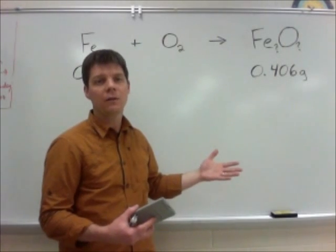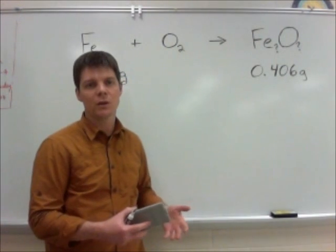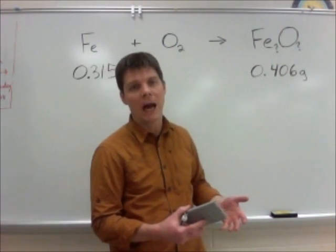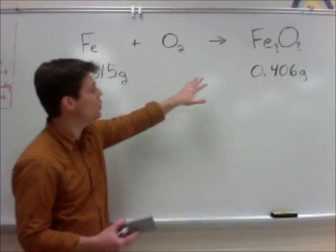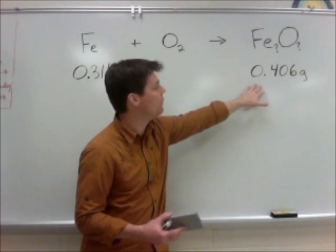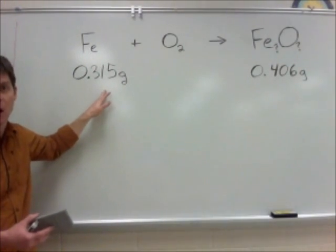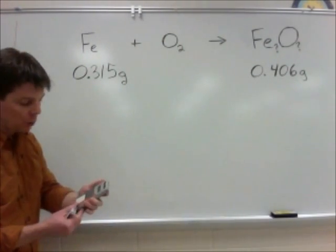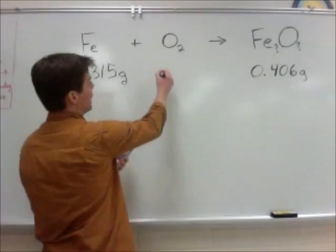Now we can use conservation of matter or conservation of mass to determine the mass of oxygen which is going to be used up in this reaction. Because the iron will be conserved, we can assume that there will be of this 0.406 grams, 0.315 grams of iron. So by subtraction, we can calculate the mass of the oxygen to be 0.091 grams.